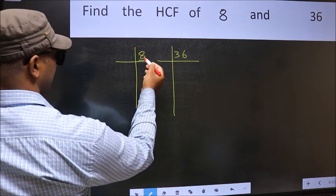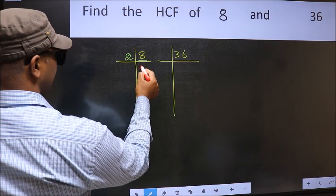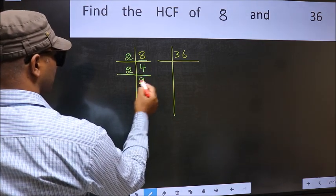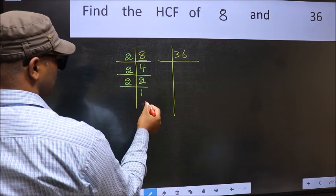Here we have 8. 8 is 2 fours, 8. 4 is 2 twos, 4. Now 2 is a prime number so 2 ones, 2.